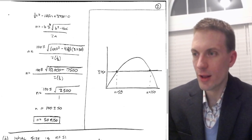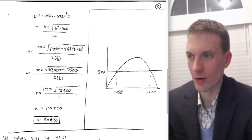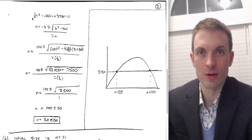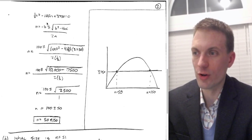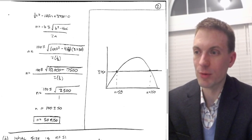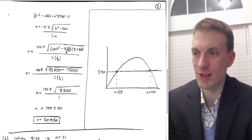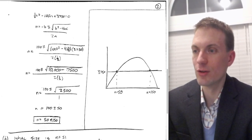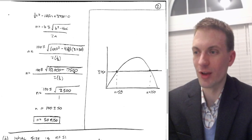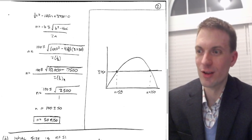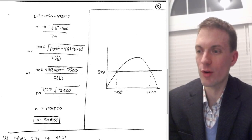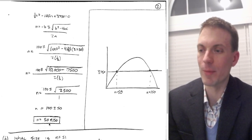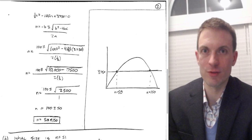Here is the polynomial in standard form. Dropping it into the quadratic formula: n = (100 ± √(100² − 4 · ½ · 3750)) / (2 · ½). The denominator simplifies to 1, so we only need the numerator. This gives n = 100 ± √(10000 − 7500) = 100 ± √2500 = 100 ± 50. So our possible network sizes are n = 50 and n = 150.